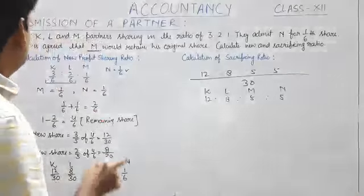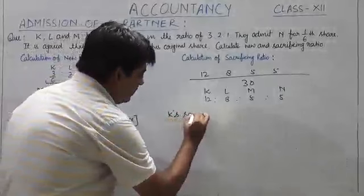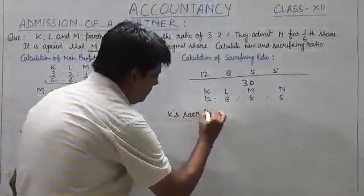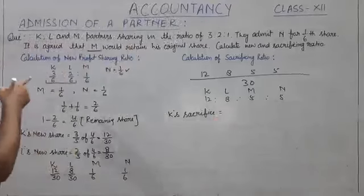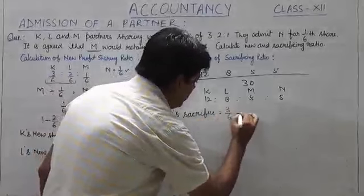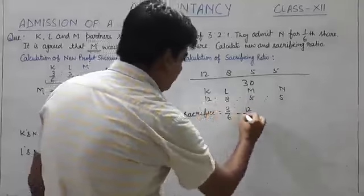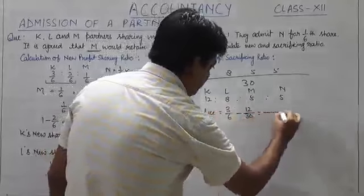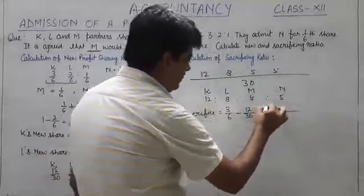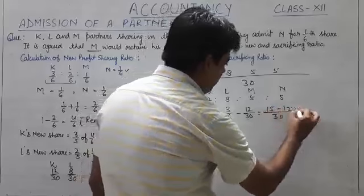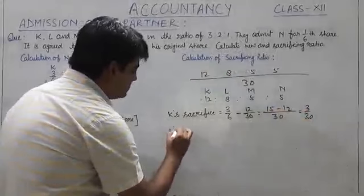Old minus new. So we will calculate K's sacrifice. K's sacrifice will be old minus new. K's old was 3/6 and new is 12/30. Once again we will take LCM, that becomes 30. 6 fives are 30, 6 threes are 15. 15 minus 12, it will come 3/30. Now we will calculate L's sacrifice.